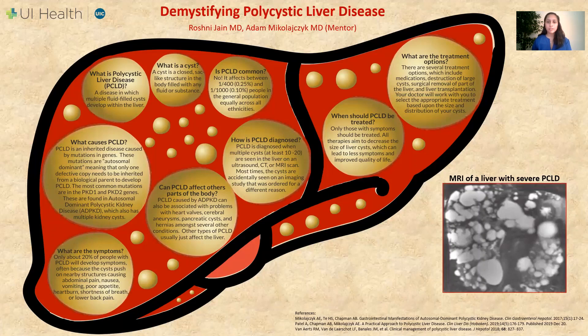We'd like to conclude by sharing a real-life MRI image of a liver with severe polycystic liver disease. This image is in the bottom right-hand corner of your screen. The white areas in this image represent cysts. Thank you for your time, and I hope we've helped to demystify polycystic liver disease.